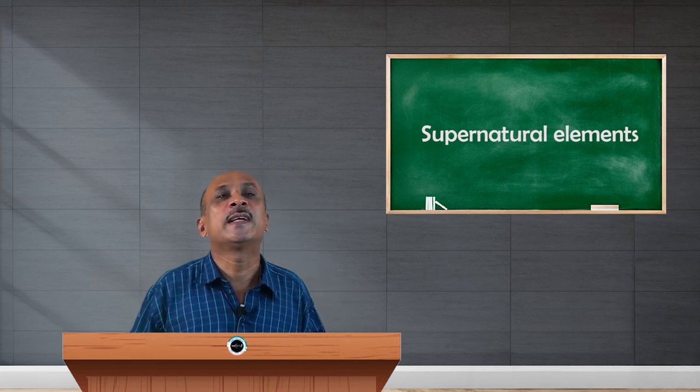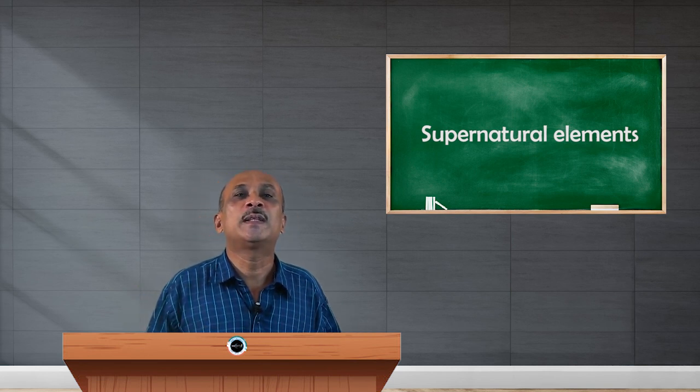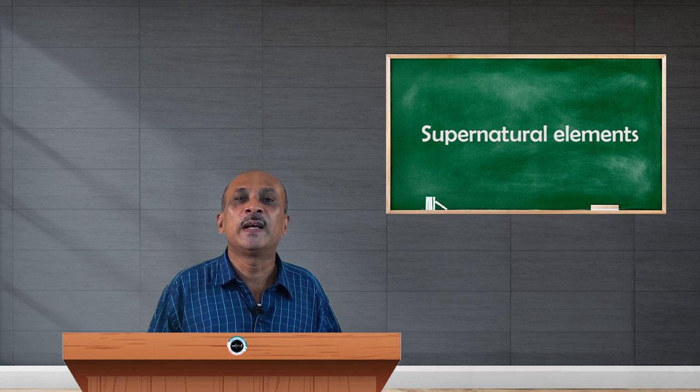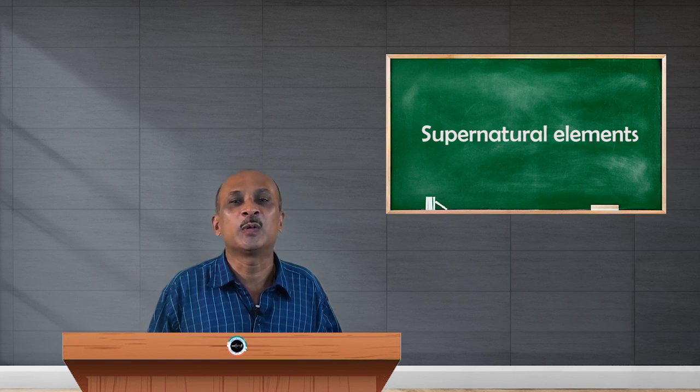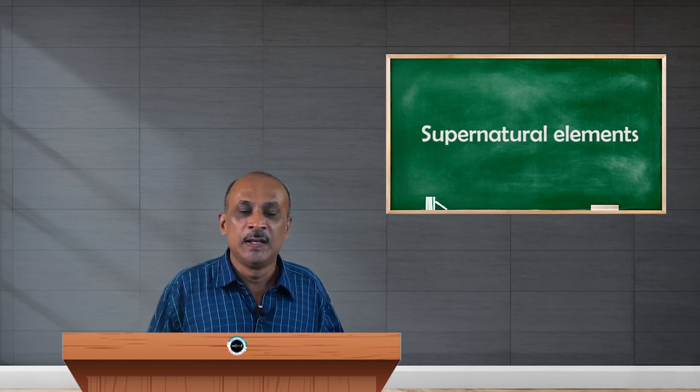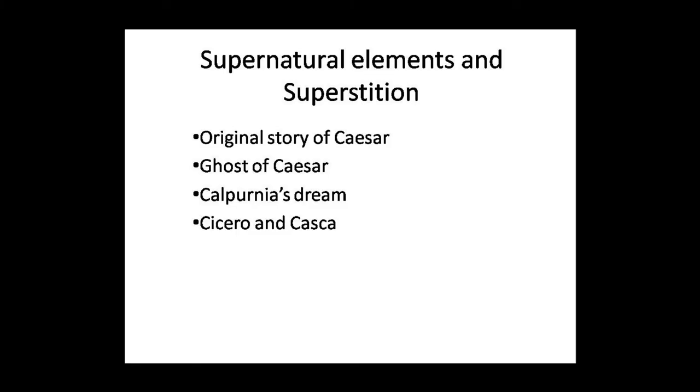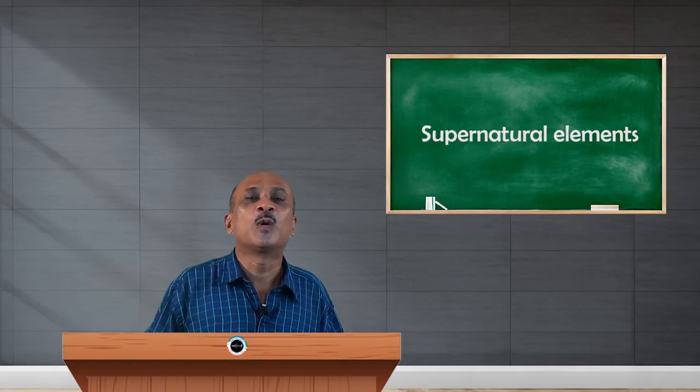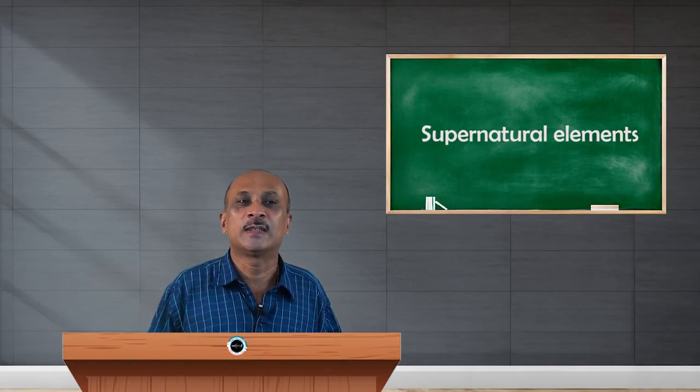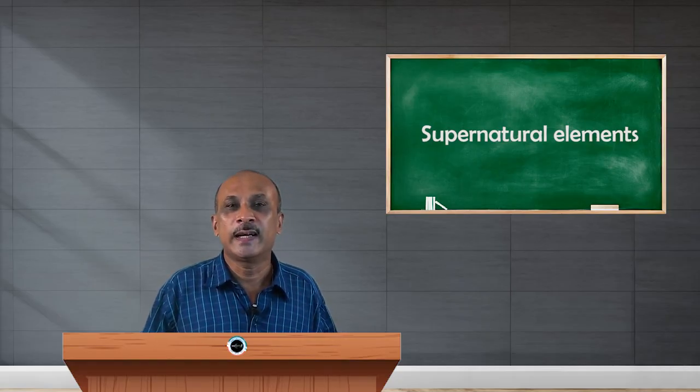Because Calpurnia says that when comets are seen they are the sign of danger to important persons. When beggars die comets will not be seen, but when they are seen it is affecting the lives of important persons. That is the role of the superstitious element in the play. Thank you.